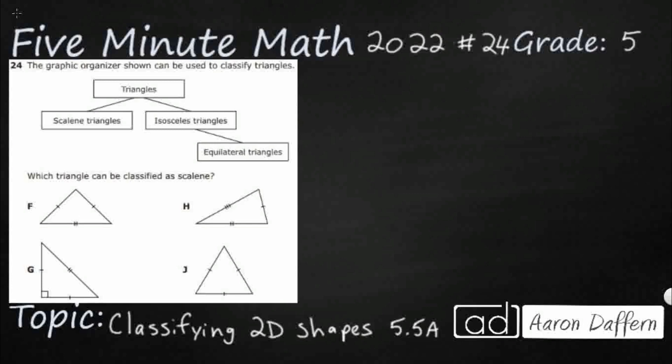So we have a graphic organizer, and it looks like we are just dealing with triangles here. You notice that underneath triangles we have three different types, but it really starts with two types, and then there is a third.